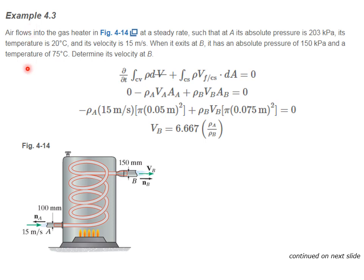Example 4.3: here we have air that flows into a gas heater at A and exits at B. At A, the absolute pressure is 203 kilopascals at a temperature of 20 degrees C, and its velocity is 15 meters per second. When it exits at B, its absolute pressure is 150 kilopascals and its temperature is 75 degrees C. Determine the velocity at B. We proceed by first writing down the continuity equation and then applying it.